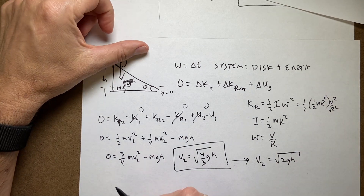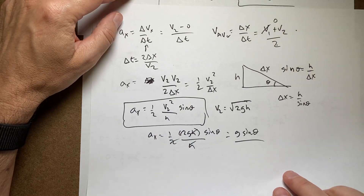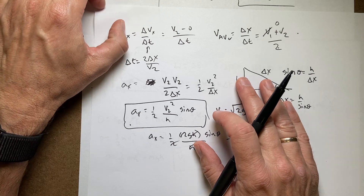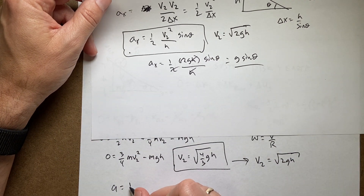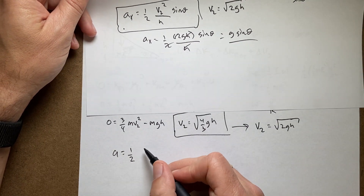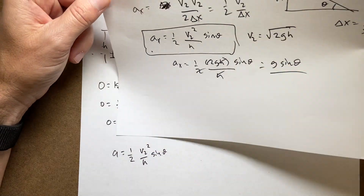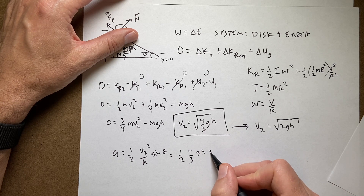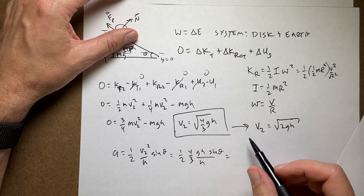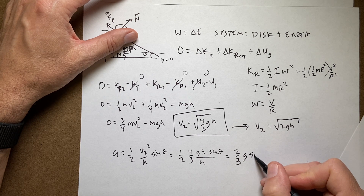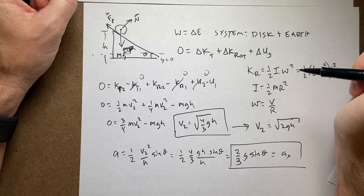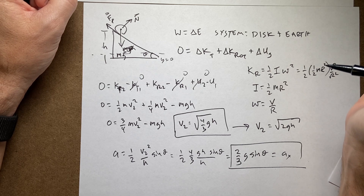Now for the disk's acceleration, the same kinematic formula applies: a = v₂²·sinθ/(2h). Plugging in v₂² = 4gh/3: a = (1/2)(4gh/3)(sinθ/h) = (2/3)g·sinθ. Compare to the block's g·sinθ — the disk's acceleration is lower. That's why the block wins. Next I'll redo this problem using the momentum principle and angular momentum principle instead of work-energy.